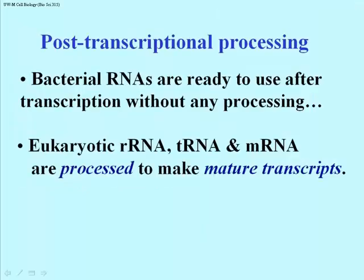Before we end, let's review post-transcriptional processing. Bacterial RNAs, when produced by transcription, are pretty much ready to use and don't undergo any significant processing. Eukaryotic RNAs, on the other hand — all three major kinds — are processed quite extensively before the transcripts are mature: that is, ready to function as part of a ribosome (rRNA), to interact with a ribosome during translation (tRNA), or to be translated (mRNA).